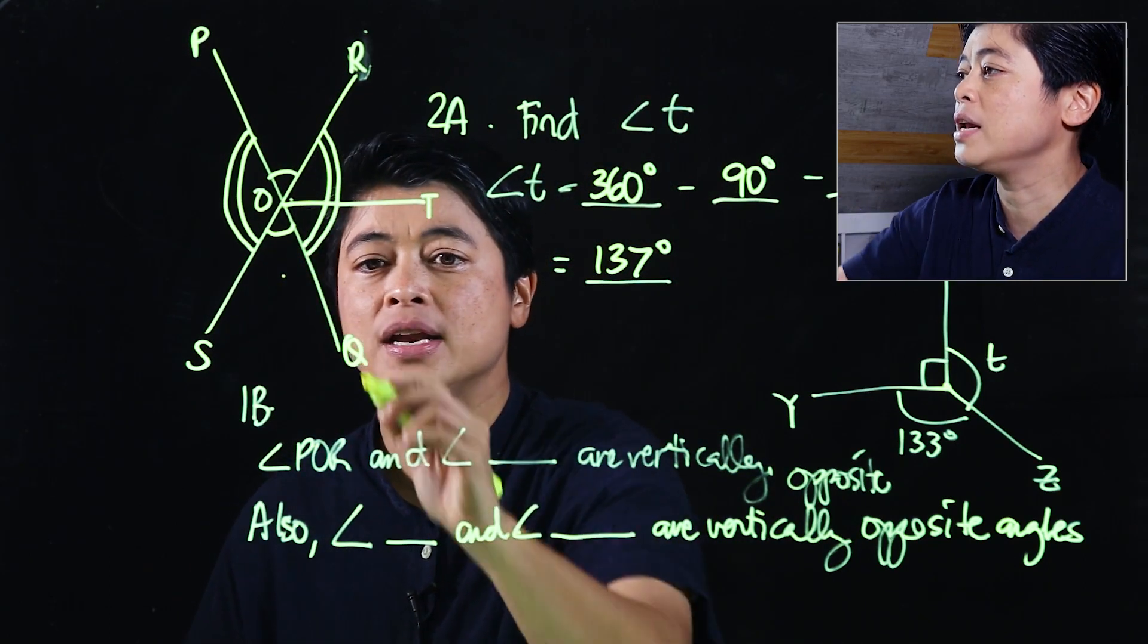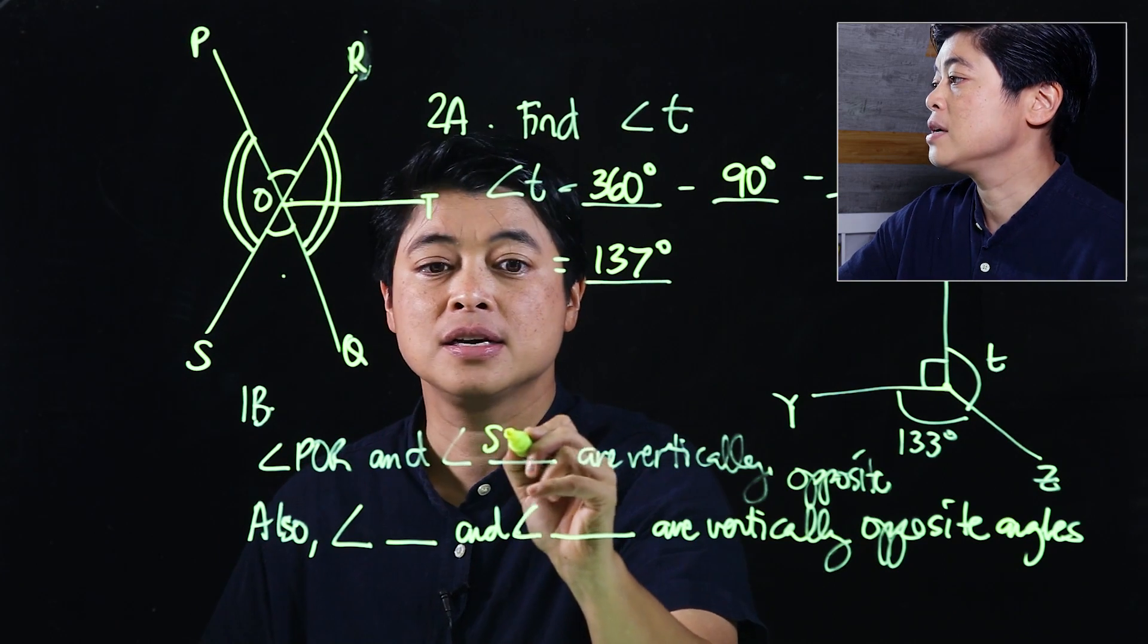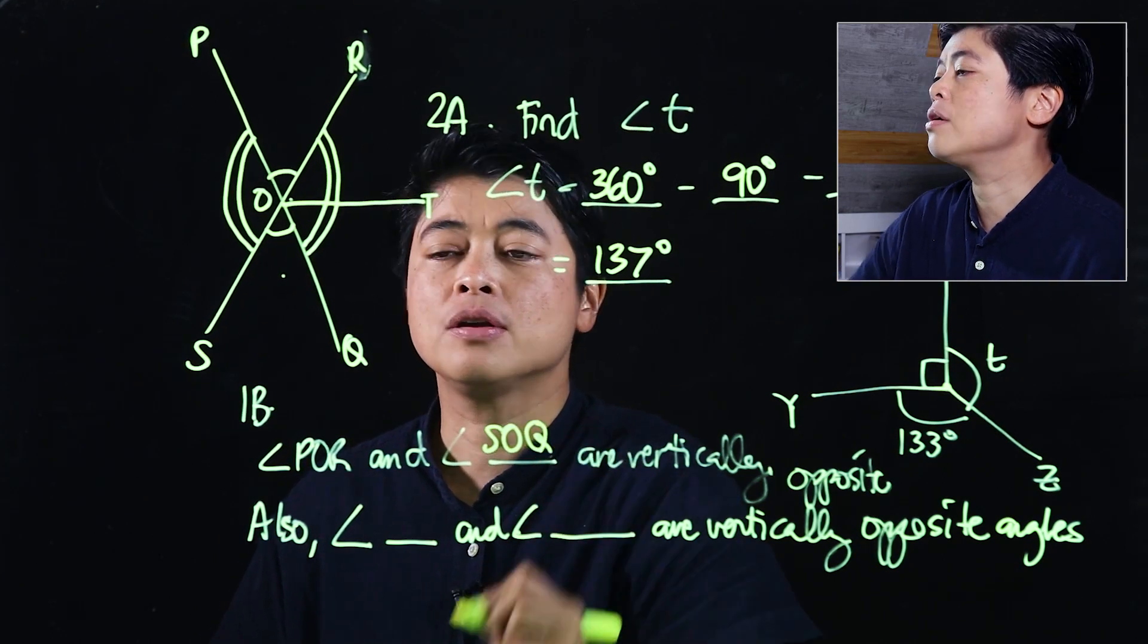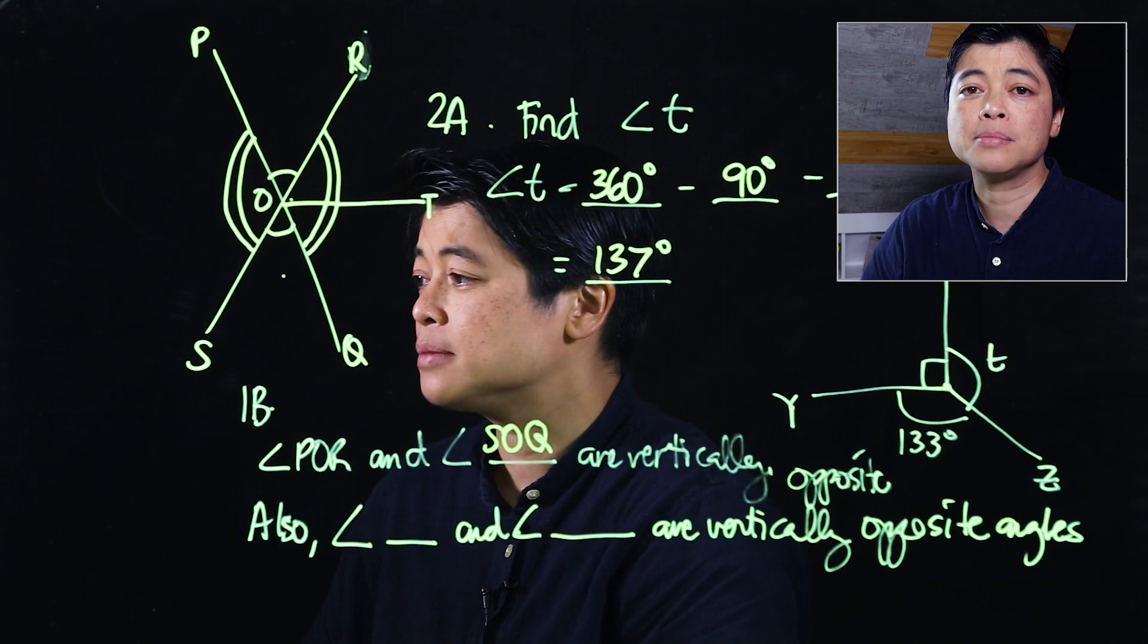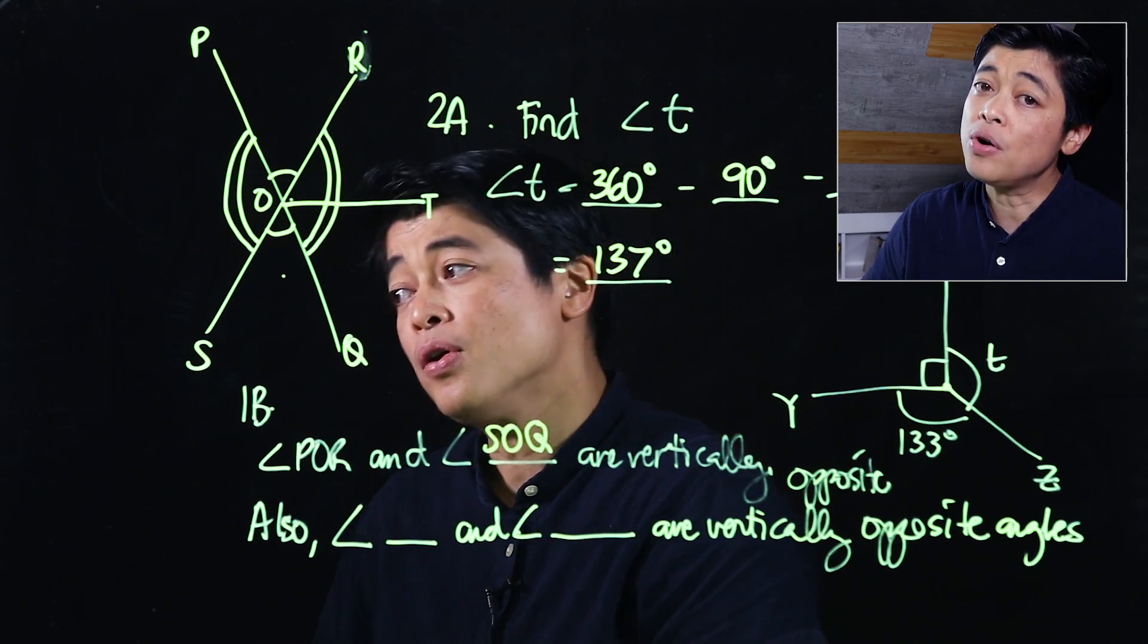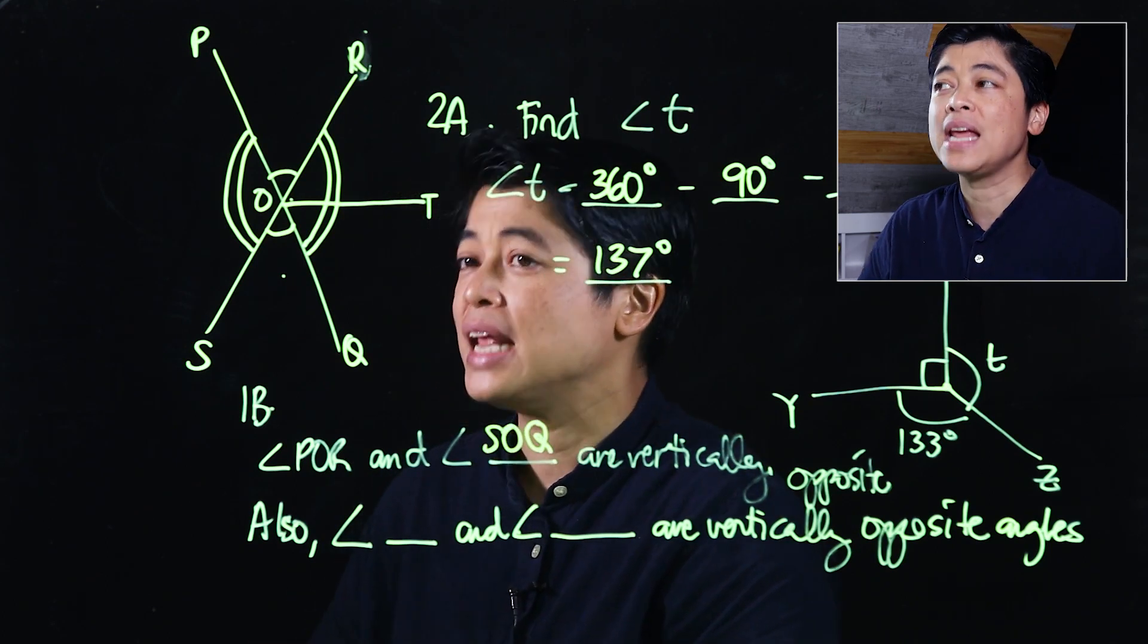It says angle POR, this angle, and blank are vertically opposite. So this is opposite this, so you can call it SOQ, you can also call it QOS, because we've learned before that angles could be named differently.